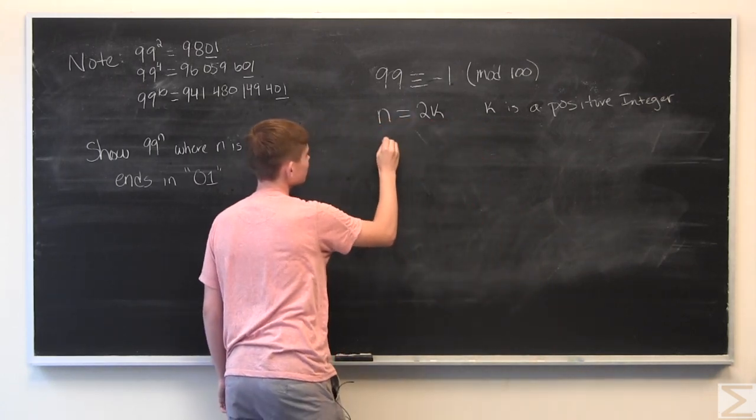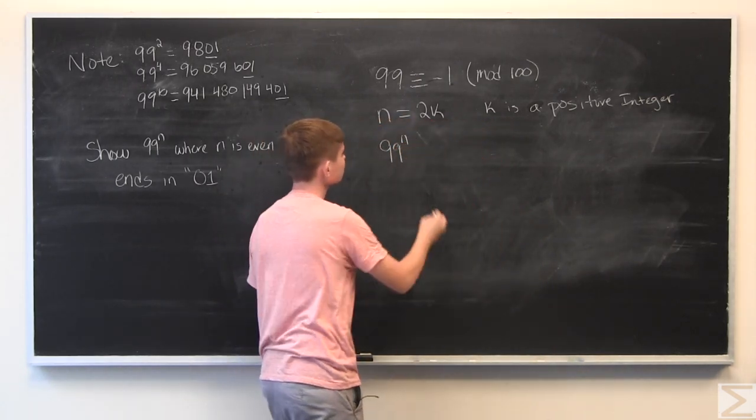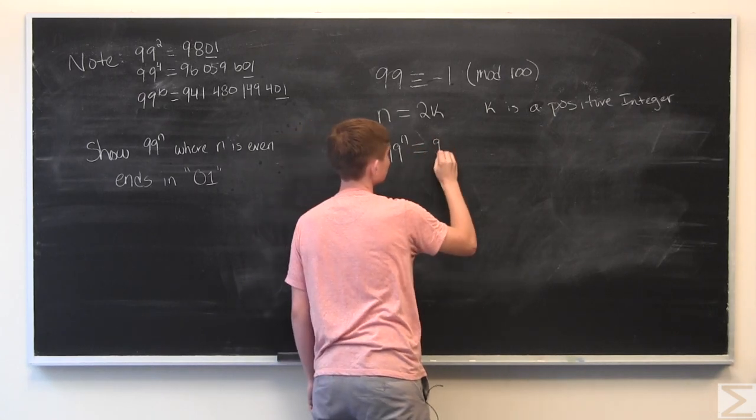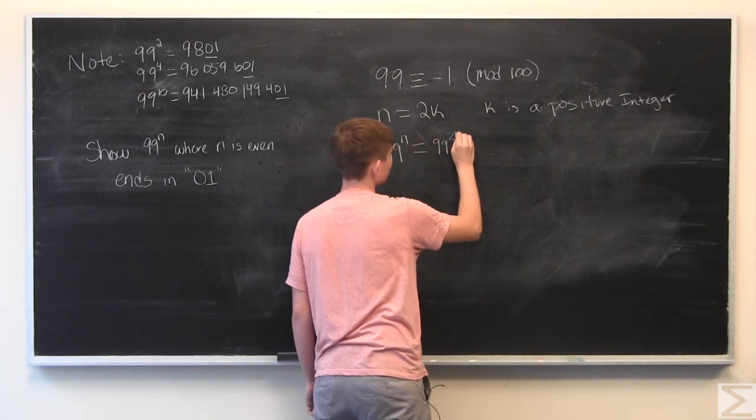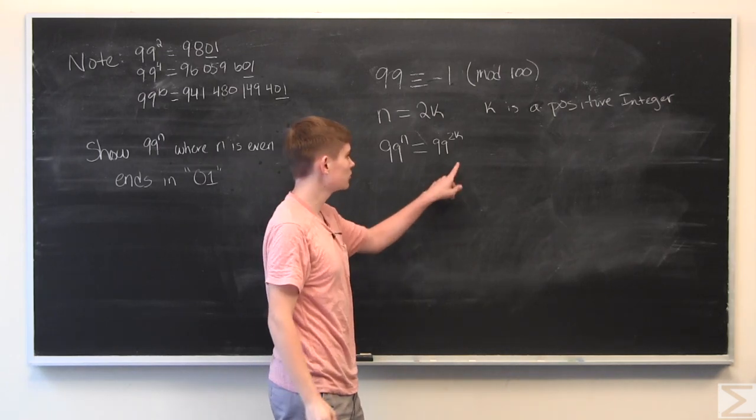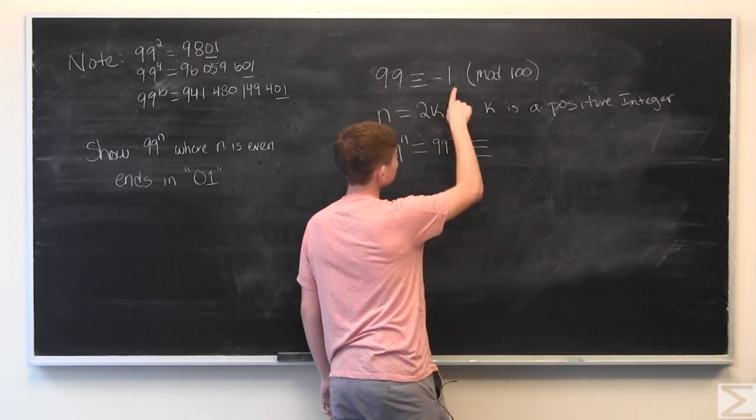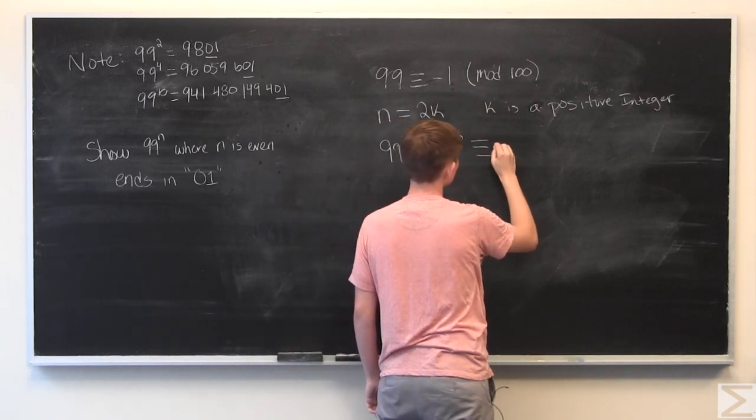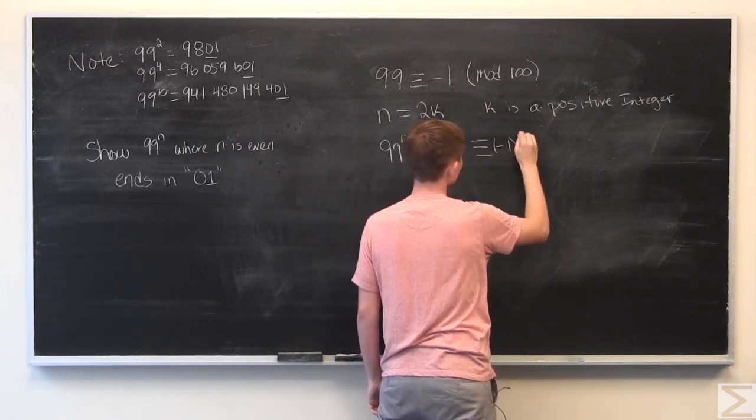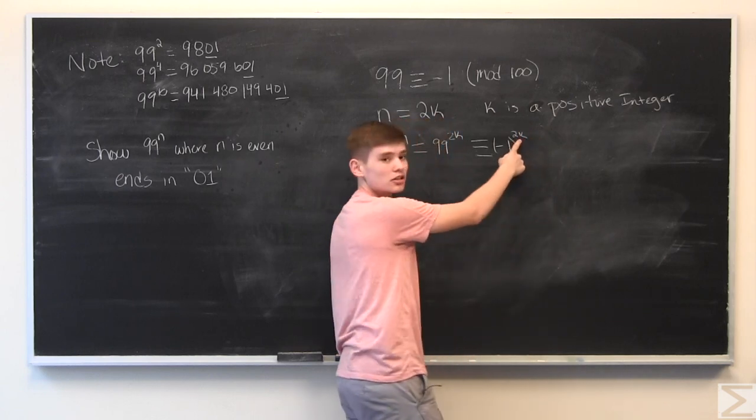All right, so we raise 99 to the nth power, which is equal to 99 to the 2 times k-th power. And so we just do this. So this is equivalent to negative 1, and we're going to negative 1 to the 2k-th power.